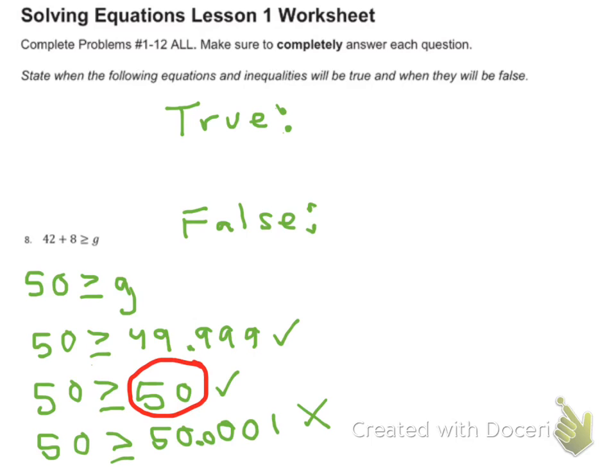We are going to say that G equals any number less than or equal to 50. We're going to take advantage of using that symbol, less than or equal to.